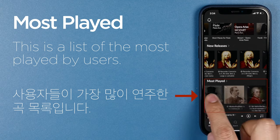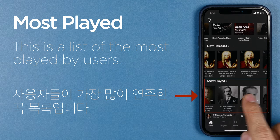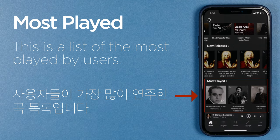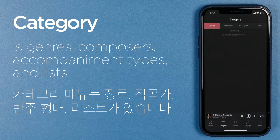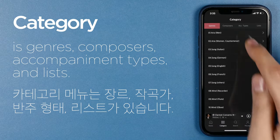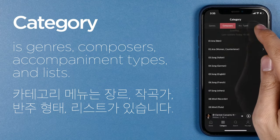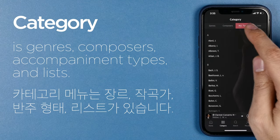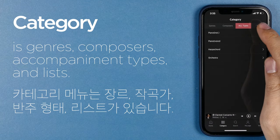The second section has collected new songs, and the third section has recently collected the most played songs. The category menu includes genres, composers, accompaniment types, and lists.